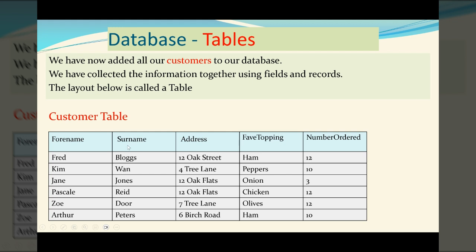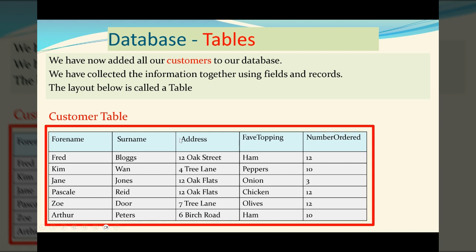So we have one table here storing our customer information, the customer table. Now if we had a bigger database, we may have another table perhaps for our staff, or another table storing information about our kitchen and the ingredients. But the important thing is all our customers are in our customer table.